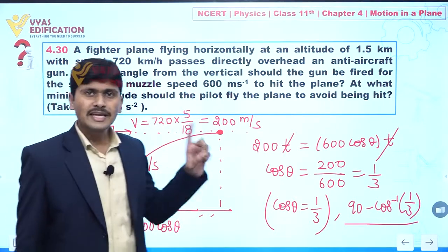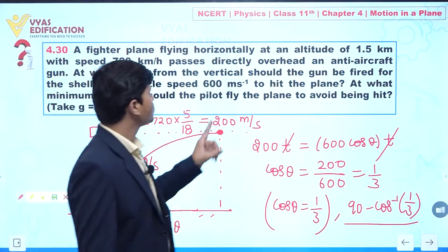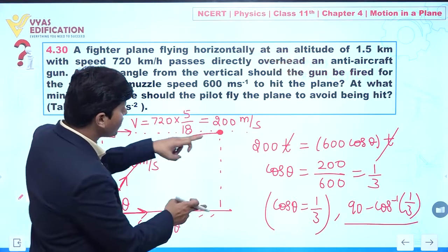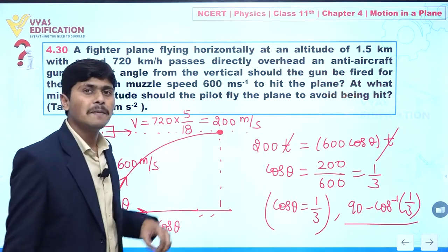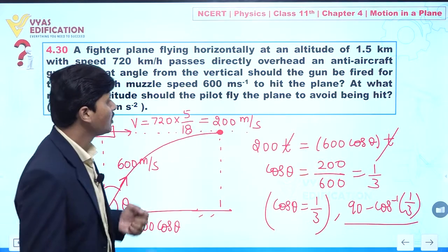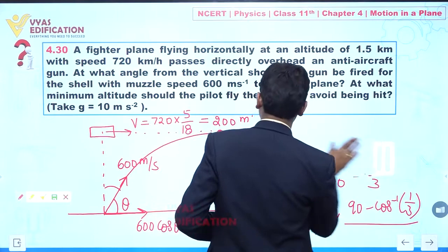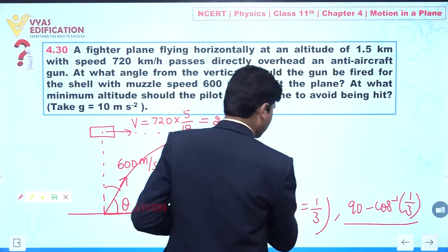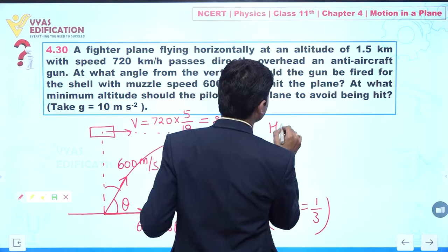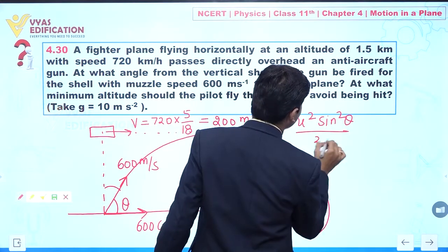Now the next part of this question asks: at what minimum altitude should the pilot fly so that it avoids being hit? It means our objective here is to calculate the maximum height gained by this bullet or cannon. So now we can write the maximum height formula.